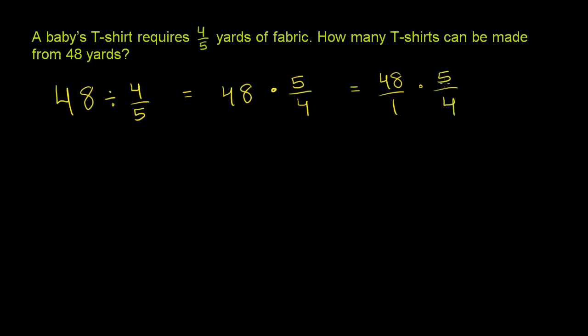Now, we could just multiply it out at this point, figure out what 48 times 5 is, and that'll be over 4. But that'll get big numbers and it'll be hard to divide and all that. But we could divide at this stage right here.